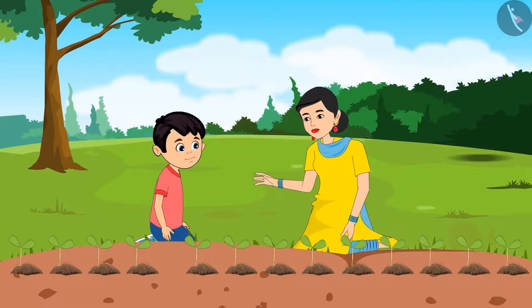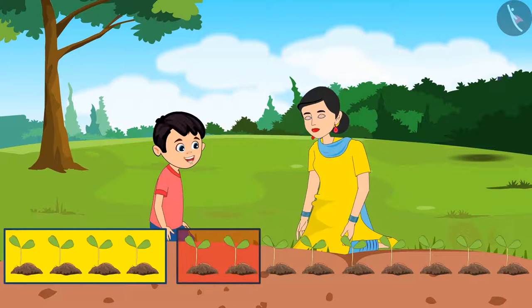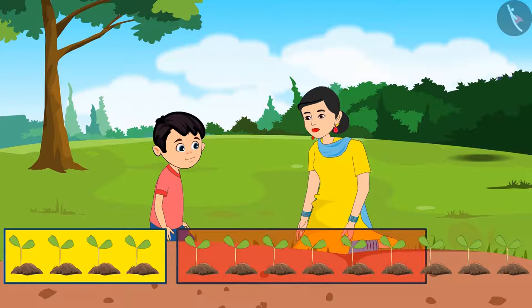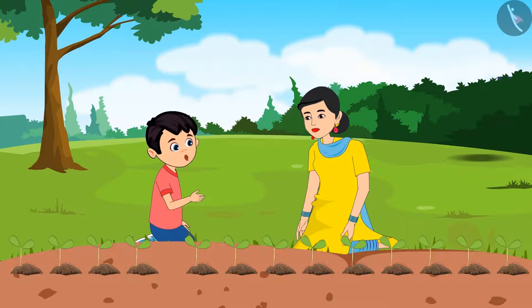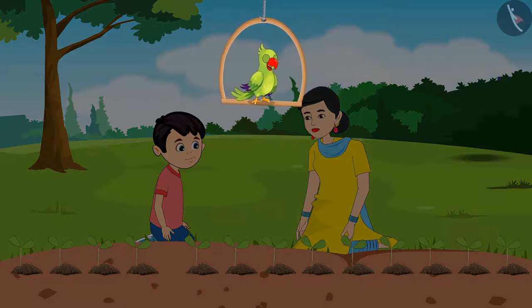Chotu, can you count and tell me how many saplings we have planted? We have planted four, five, six, seven, eight, nine, ten, eleven, twelve. Mom, we have planted twelve saplings in total. Children, has Chotu counted correctly? Let us see.